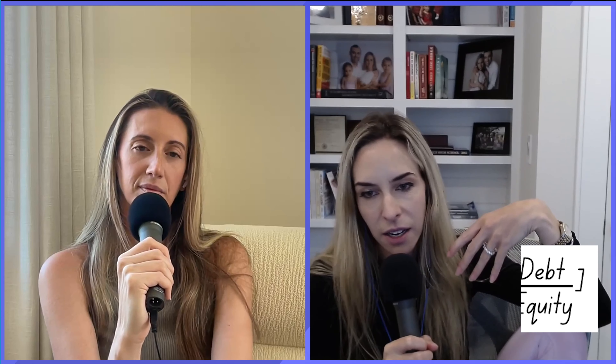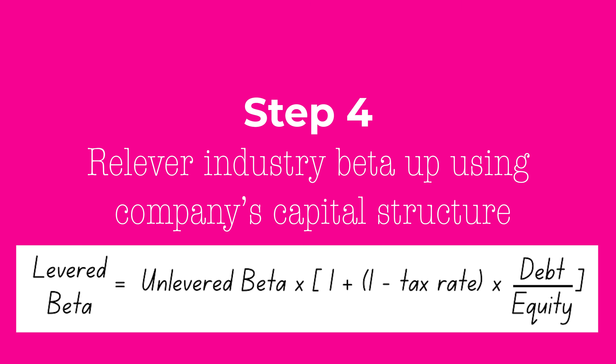Now, there is one last little wrinkle: that is the asset beta, and your company that you're analyzing probably has debt on it. So there's another equation — you feed that back in and now you relever the beta up to reflect your company's leverage.